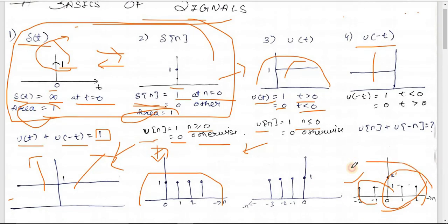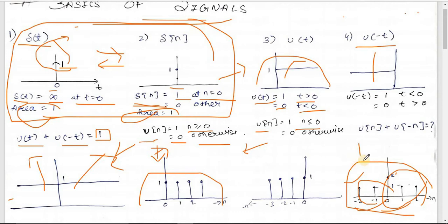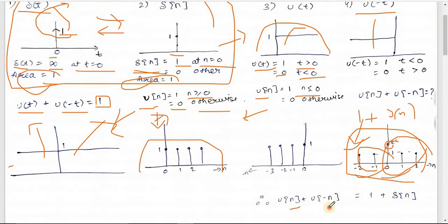To represent u[n] + u[-n] mathematically: observe the signal is 1 from minus infinity to infinity, but at n=0 it equals 2. We know δ[n] gives magnitude 1 only at n=0. So u[n] + u[-n] = 1 + δ[n], where the constant 1 covers all n and δ[n] adds the extra 1 at n=0.